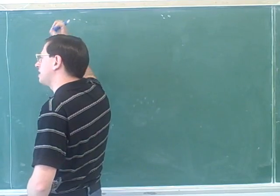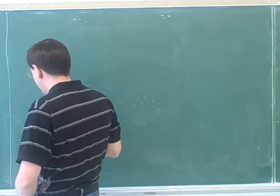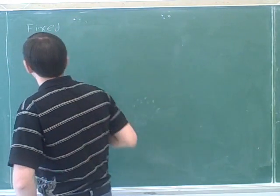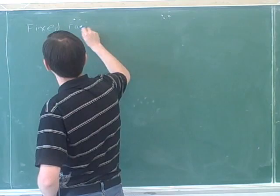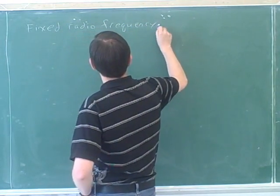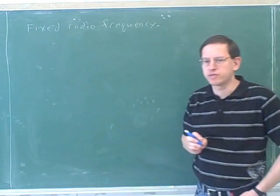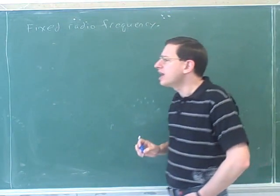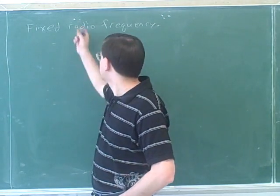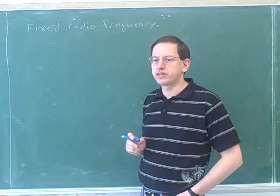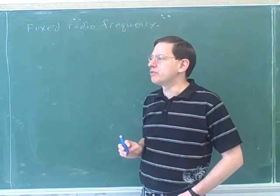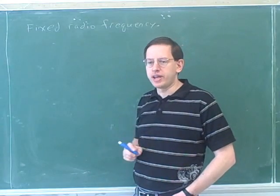The basic setup for NMR is that we have a fixed radio frequency, and it turns out that it's possible for nuclei to absorb radio waves. So we're going to shoot radio waves at the sample and we're going to see when the radio waves are absorbed.